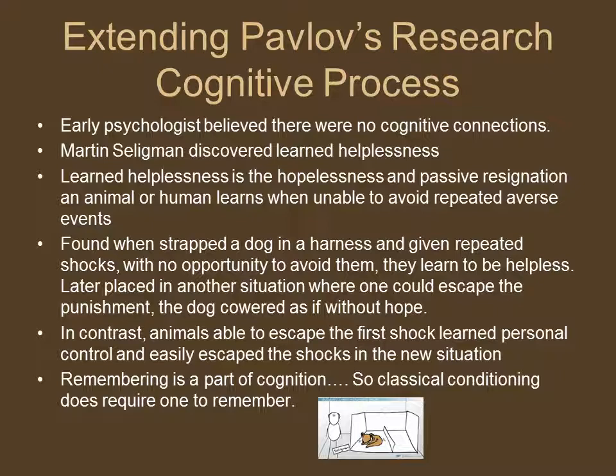Many early researchers thought that behaviorism was the only influence on behavior, but current researchers believe that cognition and biological influences could also influence learned behavior. This extends Pavlov's research into the cognitive process. Early psychologists believed there were no cognitive connections, but Martin Seligman's discovery of learned helplessness helped prove that cognition does influence learning. Learned helplessness is the hopelessness and passive resignation an animal or human learns when unable to avoid adverse events. They did an experiment where they strapped a dog in a harness and gave it repeated shocks with no opportunity to avoid them — the dog learned to be helpless.